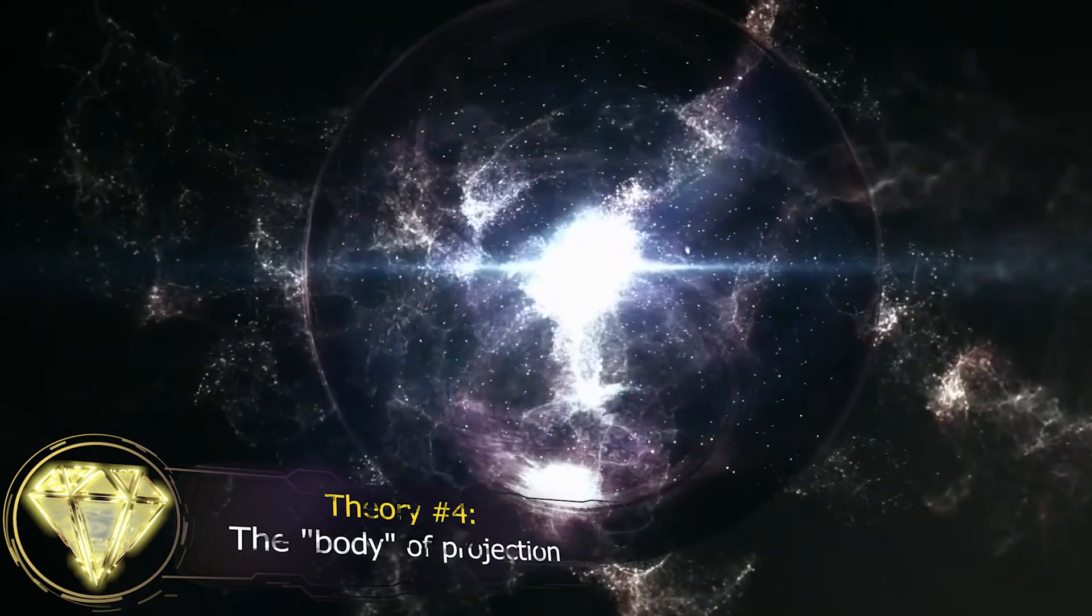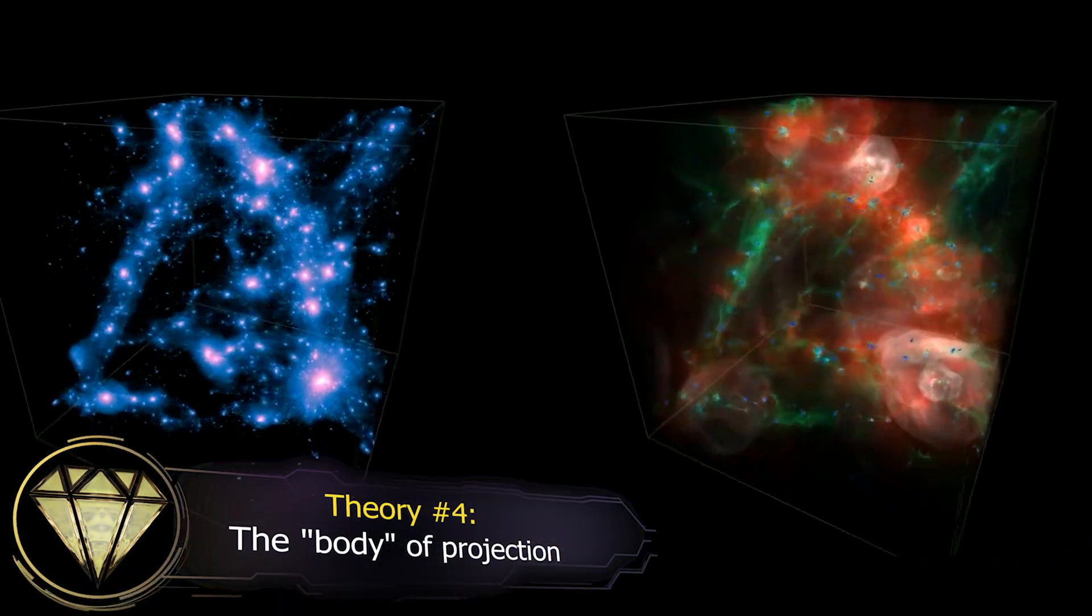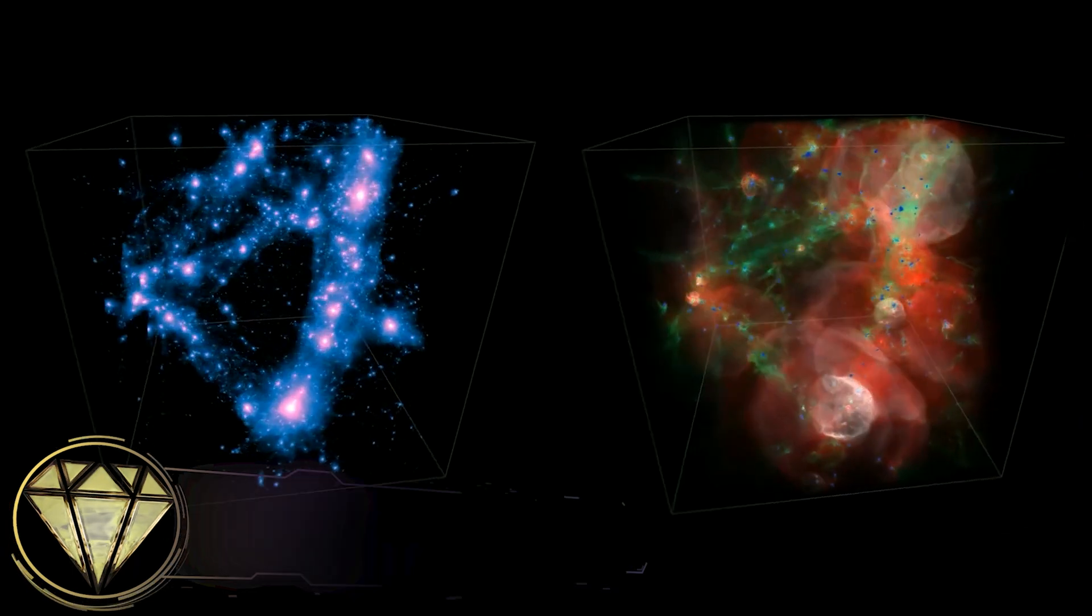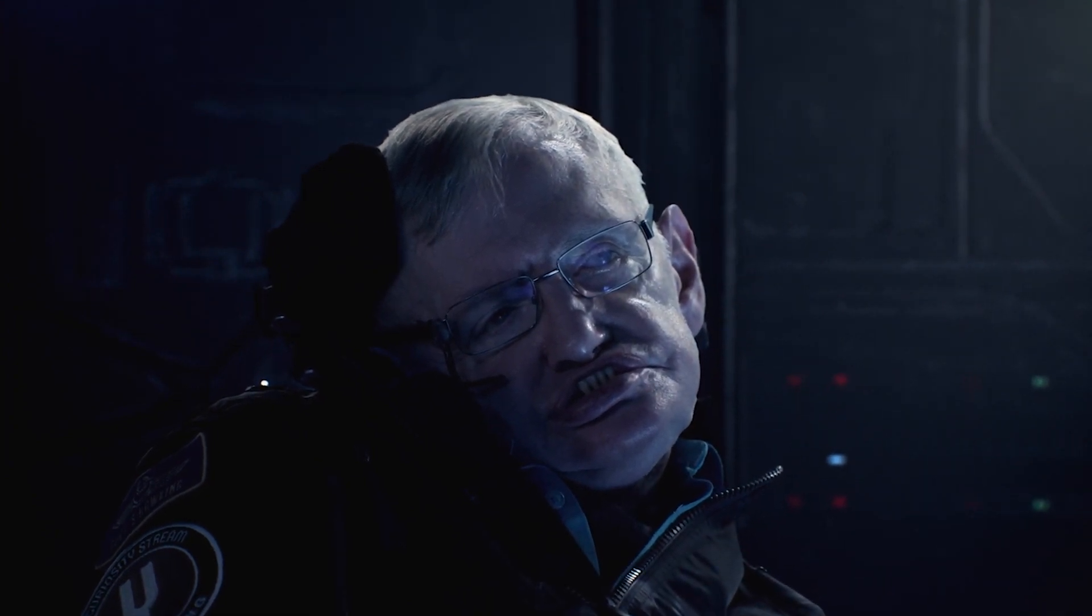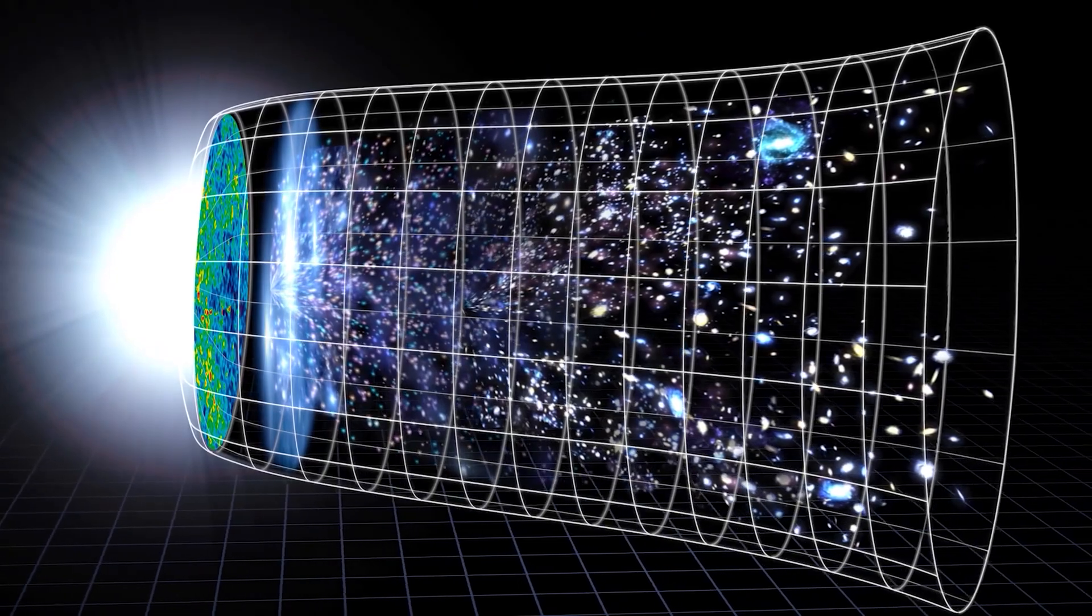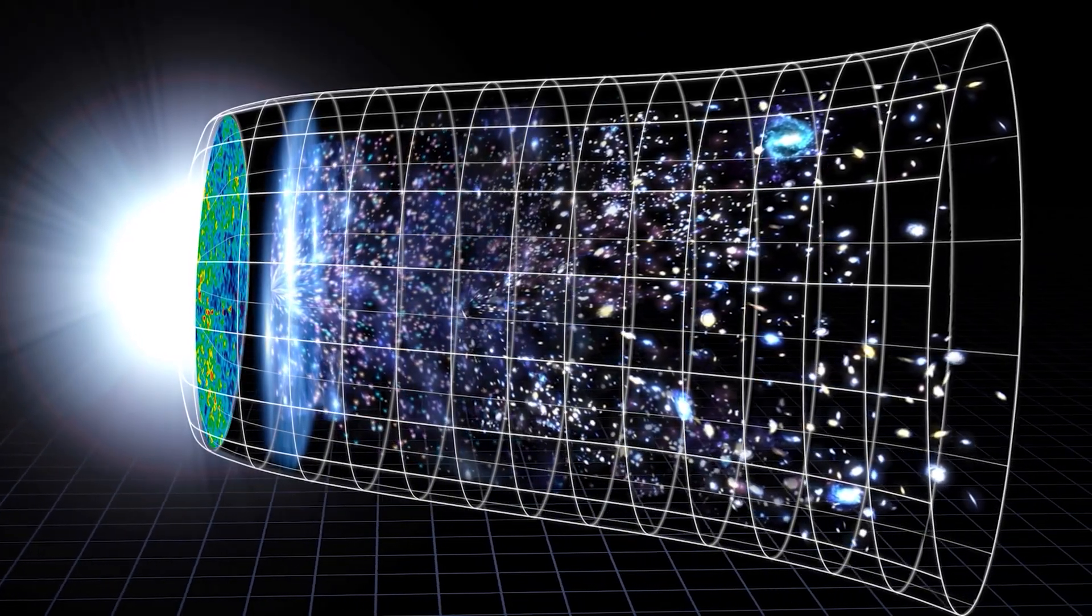The Body of Projection. The most extreme theory of what is outside of this universe comes from the famous Stephen Hawking. This eminent scientist made some very interesting observations in his later years. To everyone's surprise, it is possible that the observable universe could be a projection of some other structure. It is very difficult to explain because, here again, quantum physics calculations are involved.